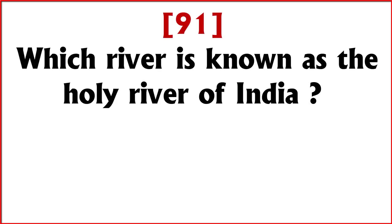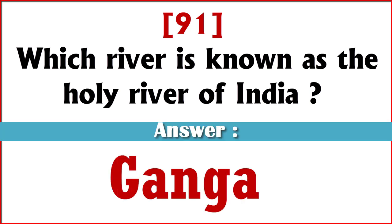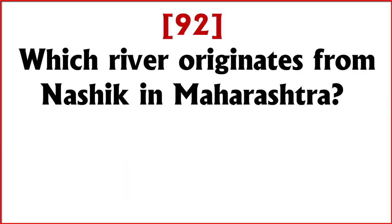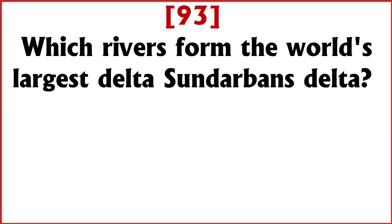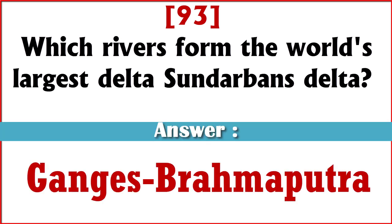Which river is known as the Holy River of India? Answer: Ganga. Which river originates from Nasik in Maharashtra? Answer: Godavari. Which river forms the world's largest delta, Sundarbans delta? Answer: Ganga and Brahmaputra.